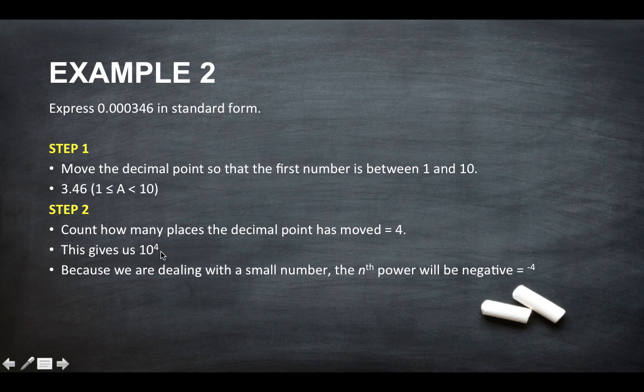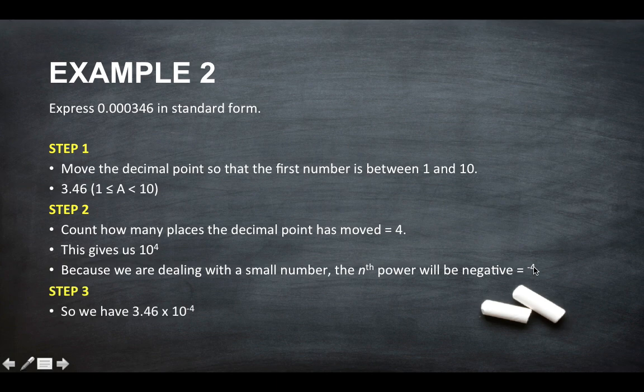Because we're dealing with a small number, the nth power will be negative. So step 3, we have 3.46 times 10 to the power of minus 4.